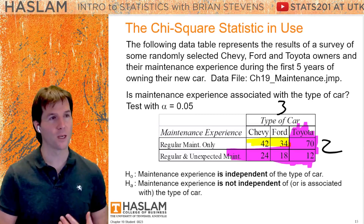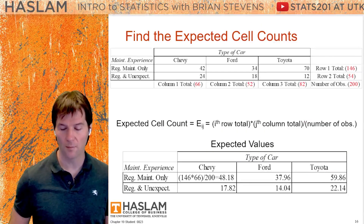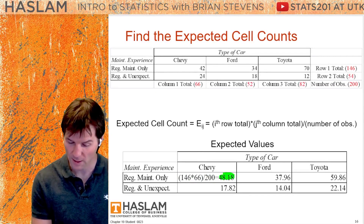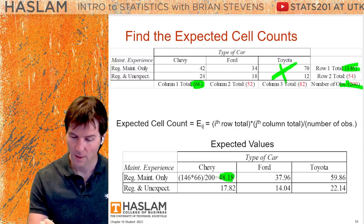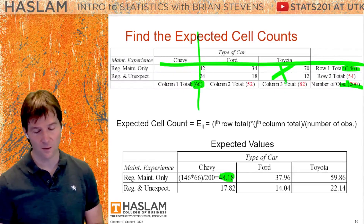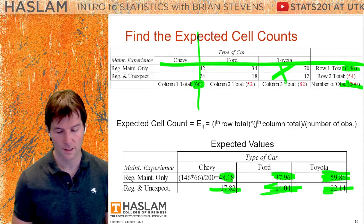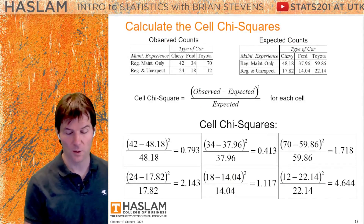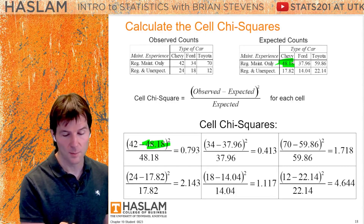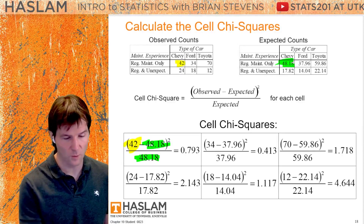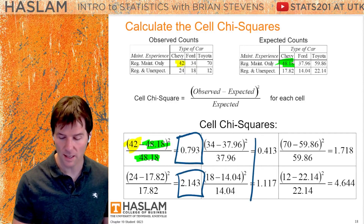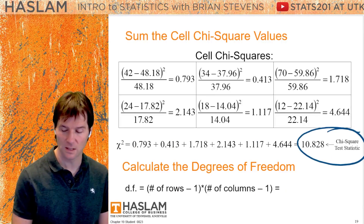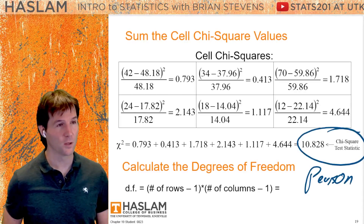Doing this by hand takes a while. We'd have to find all the expected values — for example, the value 48.18 is found by row total times column total over grand total. You trace across to the values and solve for the expected value for every single cell. After finding all the expected values, you take them and find all the cell chi-squareds using the formula: observed minus expected, squared, divided by expected. You then sum up the cell chi-squareds to get the Pearson chi-squared test statistic.